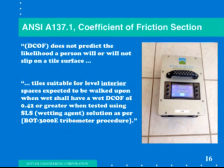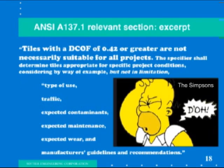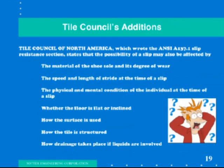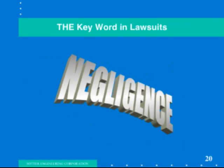But this only applies to flooring that is indoors and level. The ANSI standard goes on to say that there are several other factors that should be considered when choosing appropriate flooring for a particular use, but they tell us nothing about how to consider these other factors. The Tile Council of North America, which created this test, adds several more factors that should be considered, but again they do not specify what these factors mean in regards to slip resistance and the DCOF number you should be looking for. If you don't consider all these factors in your decision, will you be found negligent in a slip and fall accident? Negligence is the key word in a lawsuit.